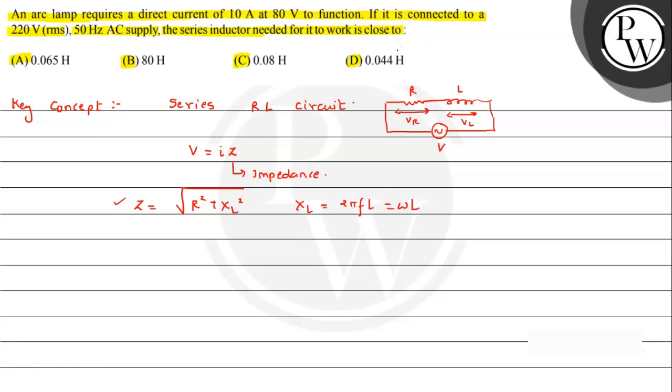First, from the question given, we have an arc lamp which requires direct current of 10 ampere. So for direct current, basically we can calculate the resistance, which will be the same whether it is connected to AC or DC.